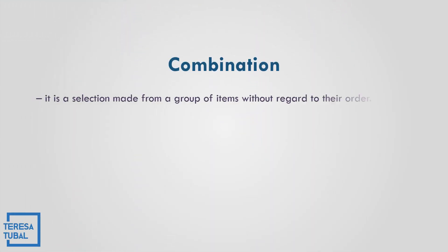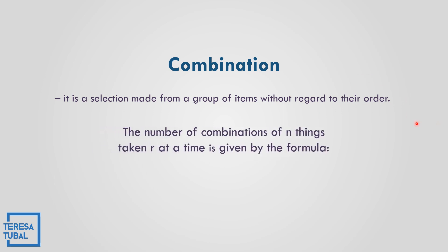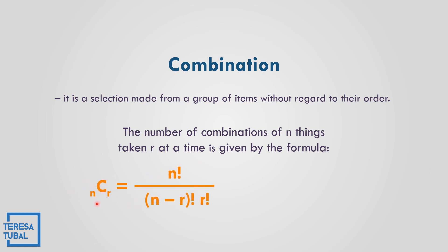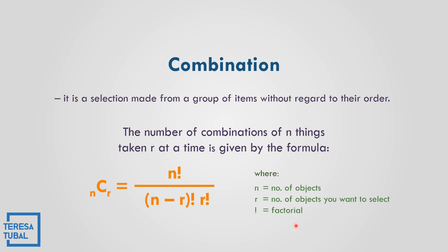What is a combination? It is a selection made from a group of items without regard to their order. The number of combinations of n things taking r at a time is given by the formula: C(n,r) equals n factorial over the quantity (n minus r) factorial times r factorial, where n is the number of objects, r is the number of objects you want to select, and the exclamation mark denotes factorial.